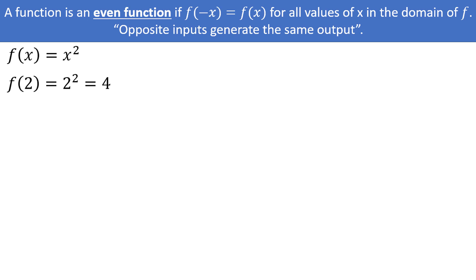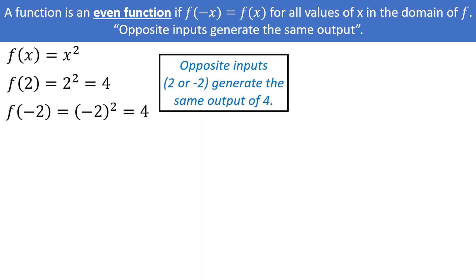If you plug in negative 2, you will get negative 2 squared, which is also equal to 4. It doesn't matter if you plug in the positive or negative version of 2 — either way you get the same output of 4. In other words, the opposite inputs of 2 and negative 2 produce the same output of 4.